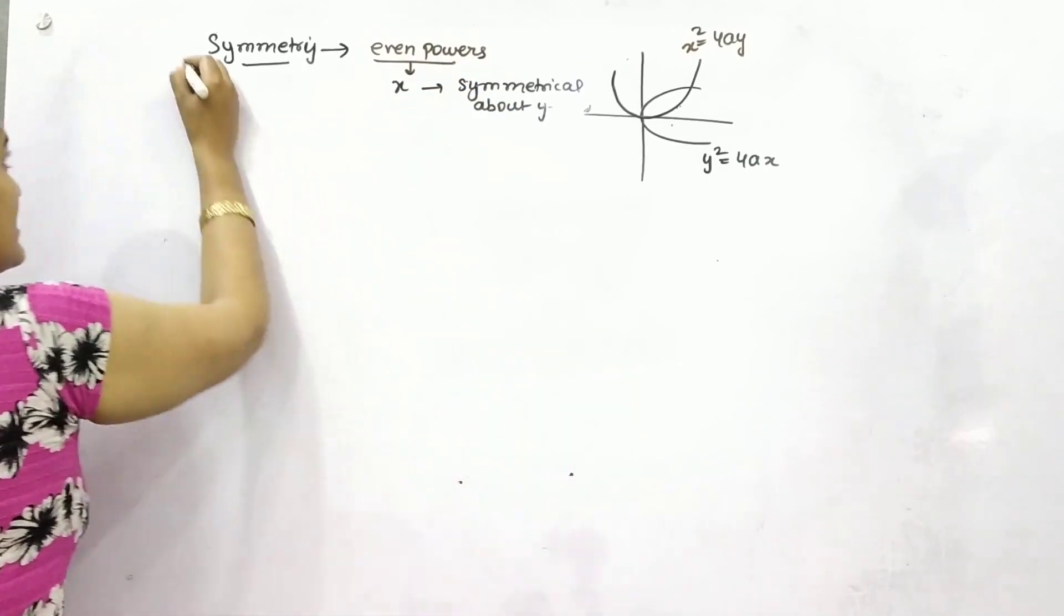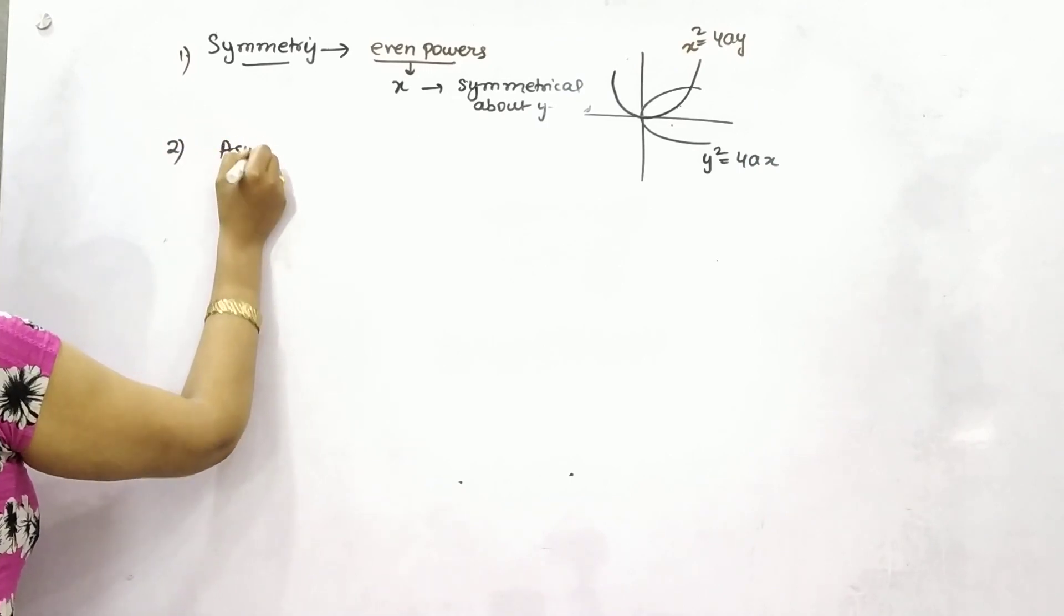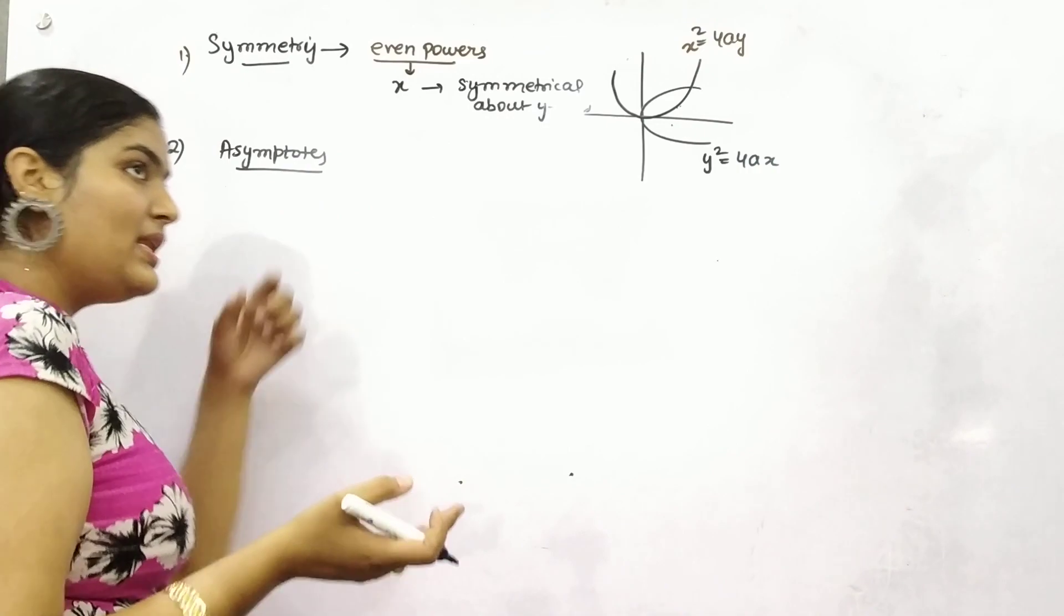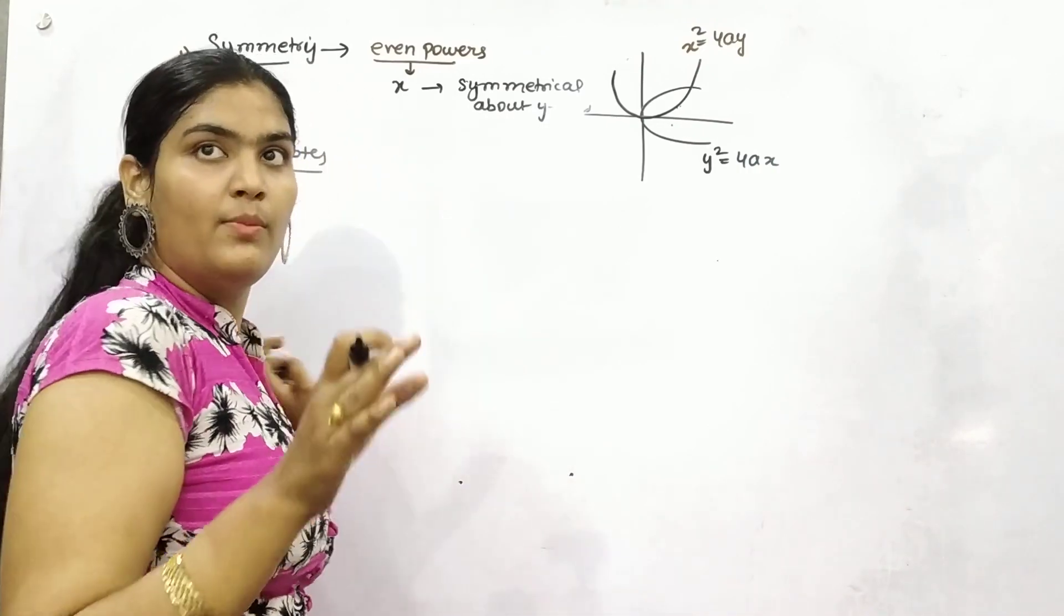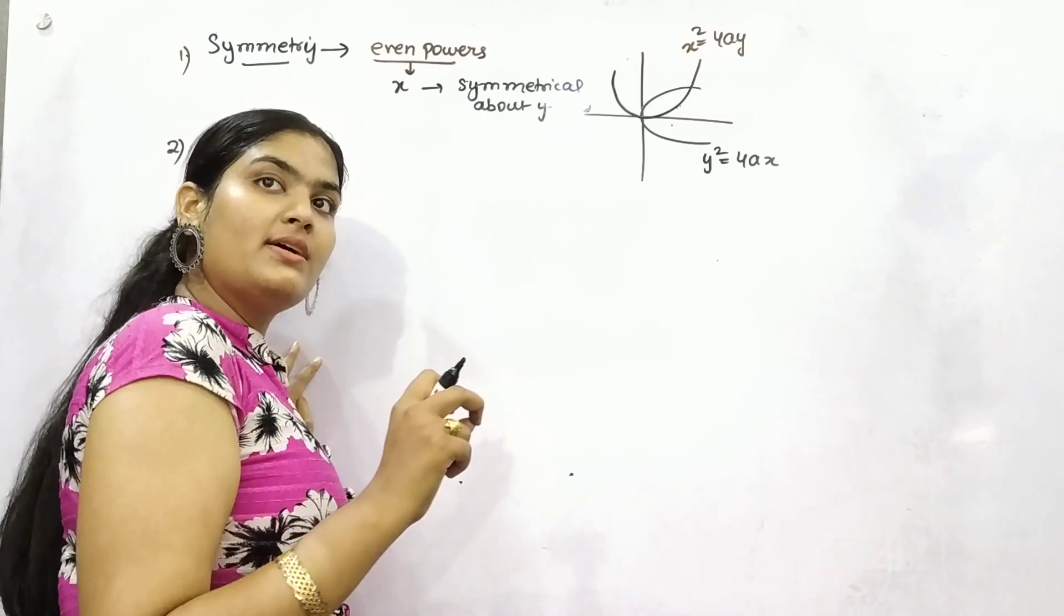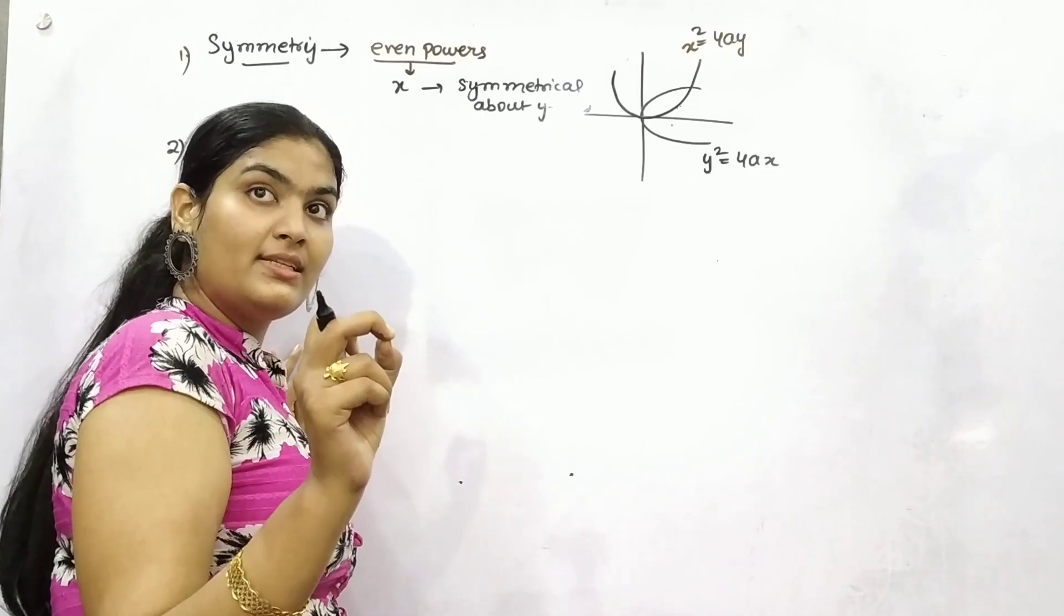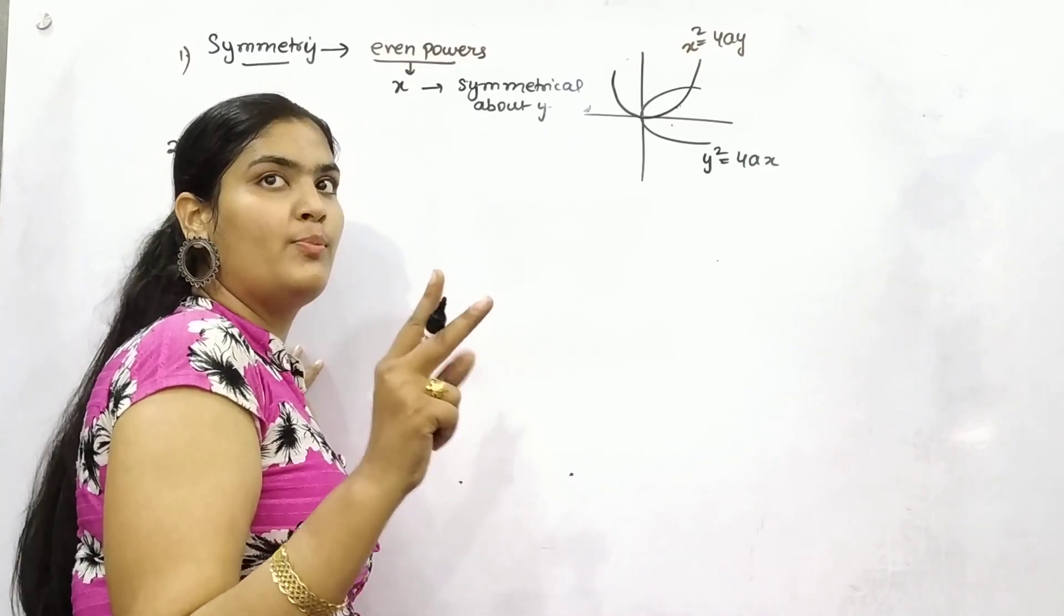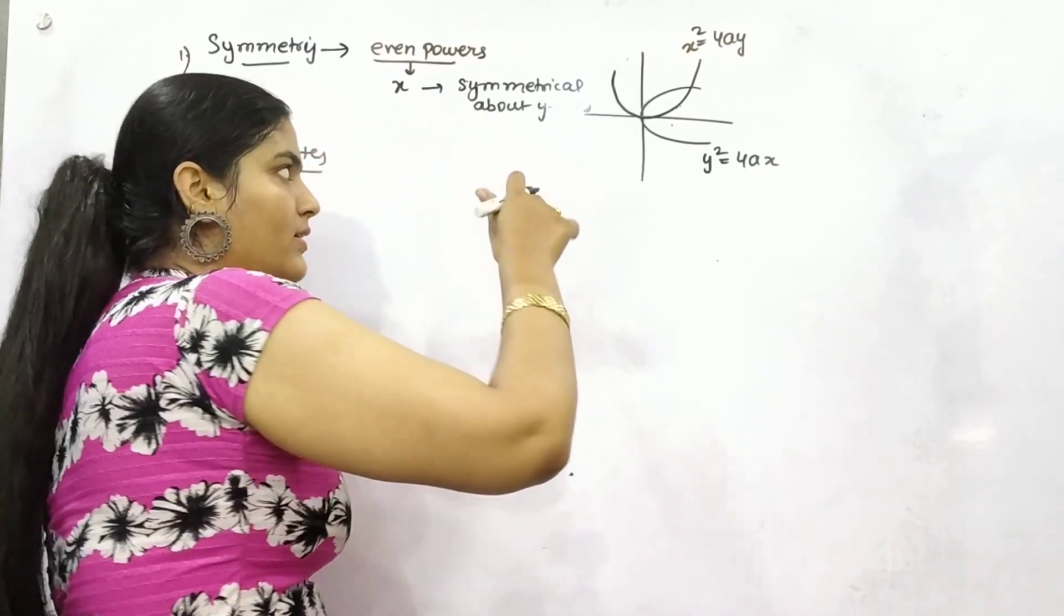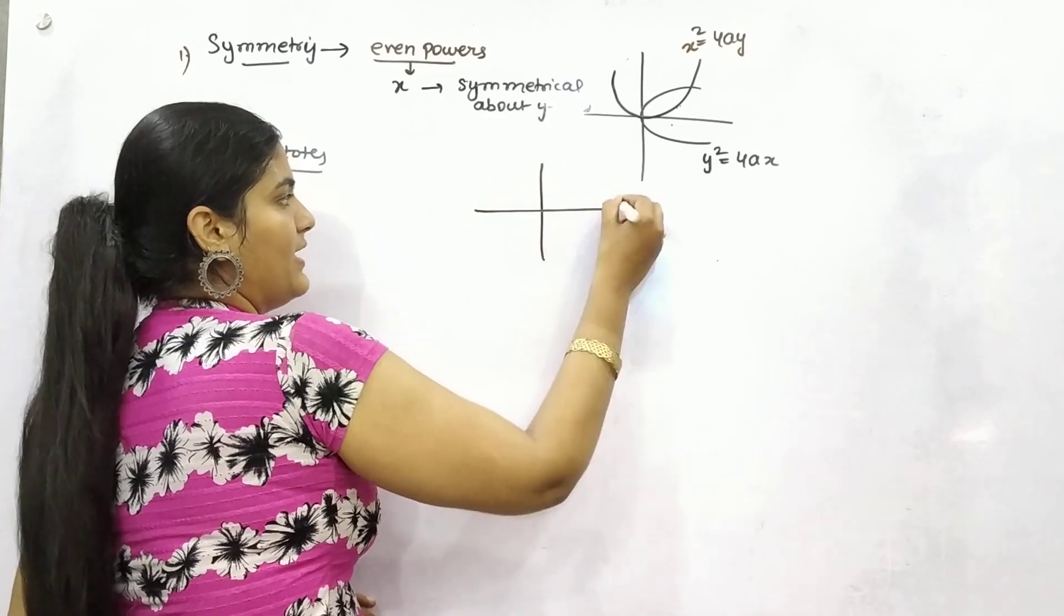Secondly, you need to find out the asymptotes. Let me recapitulate. An asymptote means a straight line which intersects a curve at two points, but those are points which are indefinite - on indefinite lines.